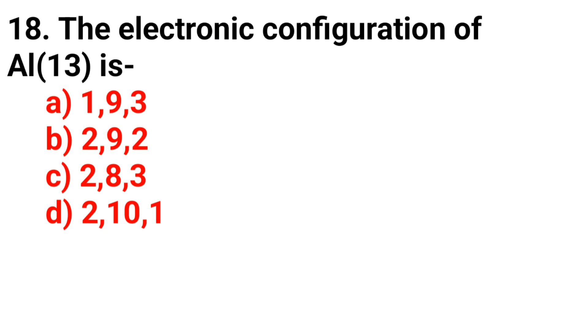Question 18. The electronic configuration of aluminum is. Answer is Option C, 283.